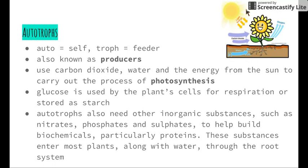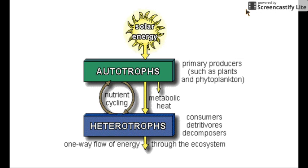Autotrophs also need other inorganic substances such as nitrates, phosphates, and sulfates to help build biochemicals — in particular proteins, which we looked at at the beginning of this topic when we examined the important molecules required for life. These substances enter most plants along with water through the root systems, drawn up from the breakdown of dead autotrophs and dead heterotrophs.